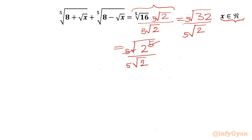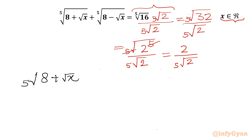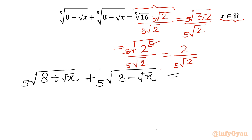I can cancel power 5 with 5th root, so it will become 2 over 5th root of 2. Let me write our equation once: 5th root of (8 plus square root x) plus 5th root of (8 minus square root x) equal to 2 over 5th root of 2.